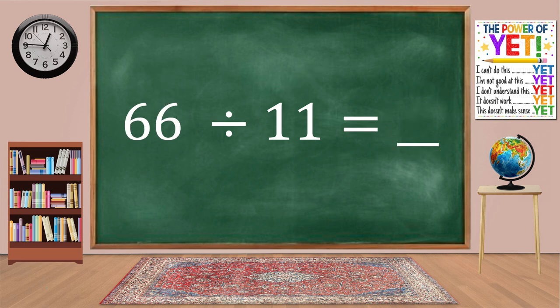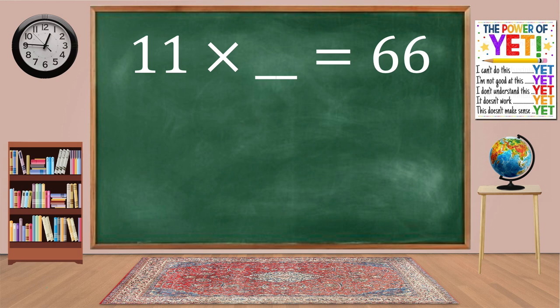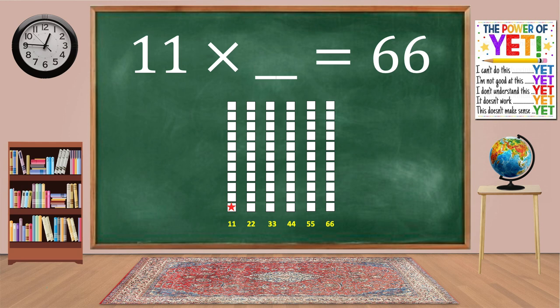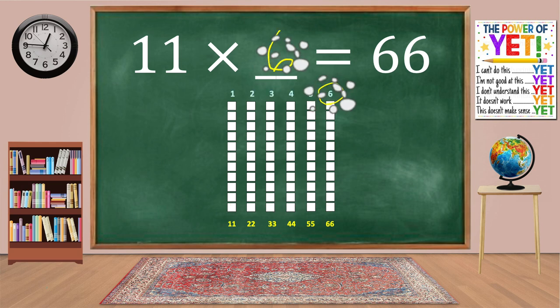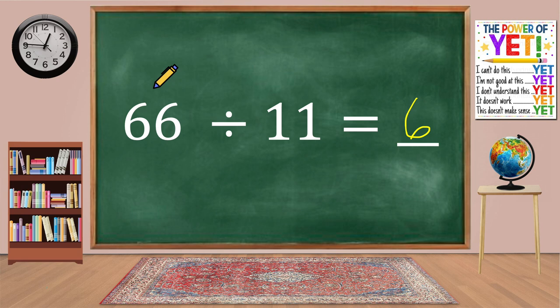66 divided by 11 equals blank. Our related fact is 11 times what equals 66. Skip count: 11, 22, 33, 44, 55, 66. We have six columns. 11 times 6 equals 66. 66 divided by 11 equals 6.